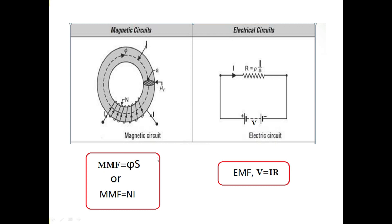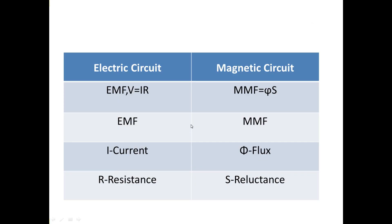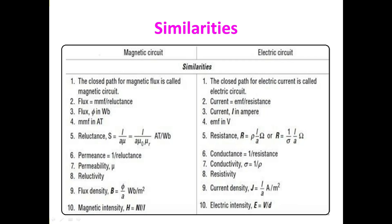Flux is analogous to current, and reluctance is analogous to resistance in the electric circuit. Electromotive force (EMF) is analogous to magnetomotive force (MMF) in the magnetic circuit. Just as resistance opposes current in an electric circuit, reluctance opposes flux in the magnetic circuit. These are the key similarities between the two circuits.